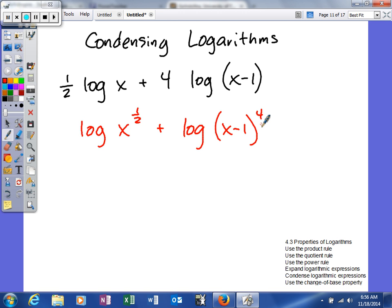I used the power rule and took the coefficients as exponents. Now I'm going to condense my logarithms, so I'm going to go from having two logarithms to just having one. I do know the x to the one-half power is basically the square root of x.